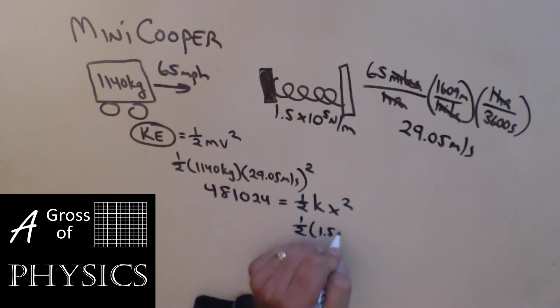So that's going to equal one half kx squared. One half, 1.5 times 10 to the 5 newtons per meter, and then x squared. So this value, 481,024, should have had joules. 481,024 divided by 0.5, divided by 1.5 e5, and then take the square root. And that would mean the elongation is 2.53 meters.